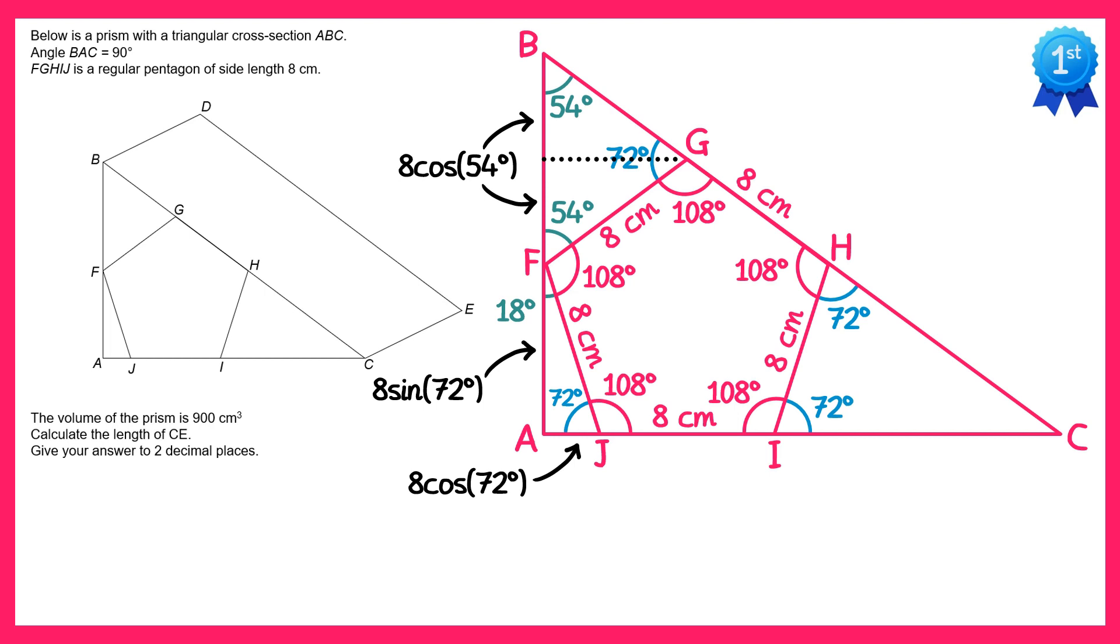Now if we look on the right hand side at triangle HCI, this is also an isosceles triangle because we have two angles the same. So if we bisect this triangle as well like this, we end up with two right angle triangles. We can find the length IC, again using trigonometry, this time it would be 4 divided by cos72.